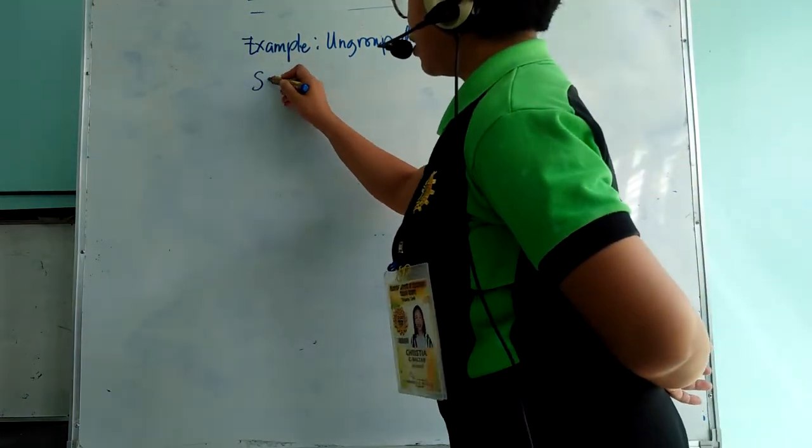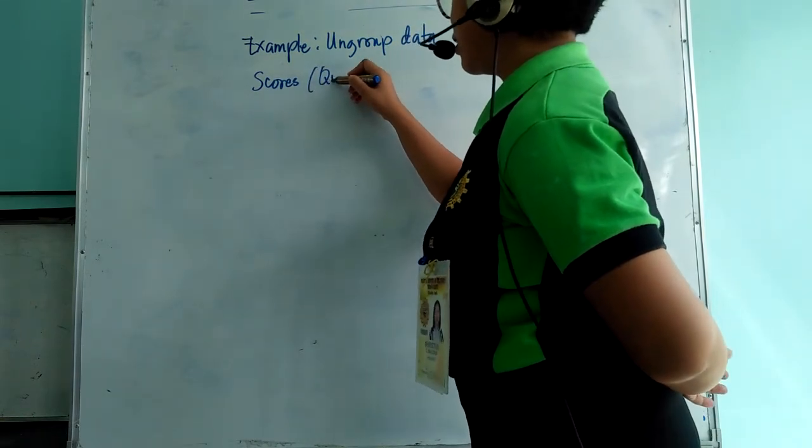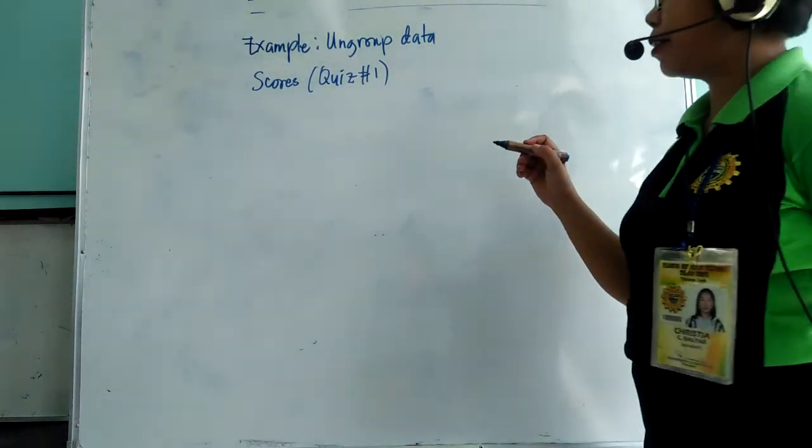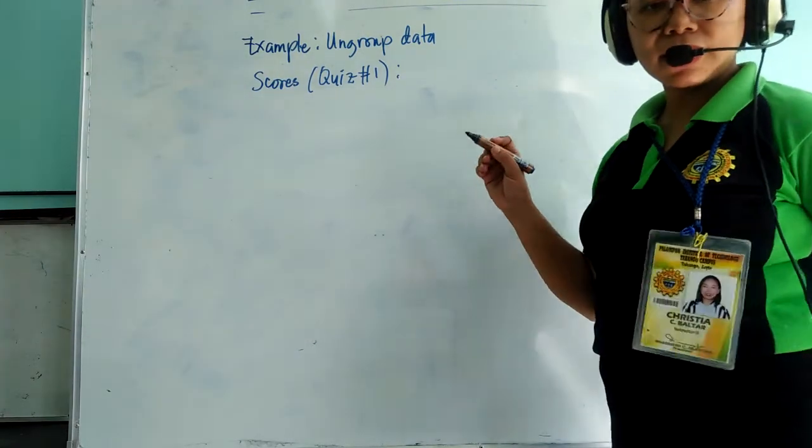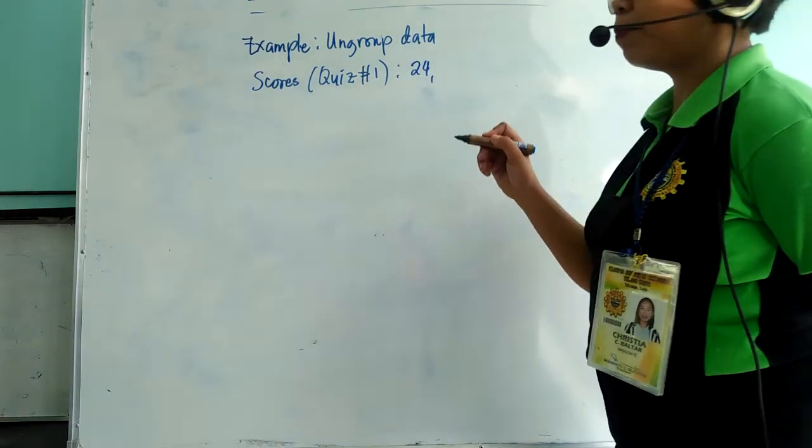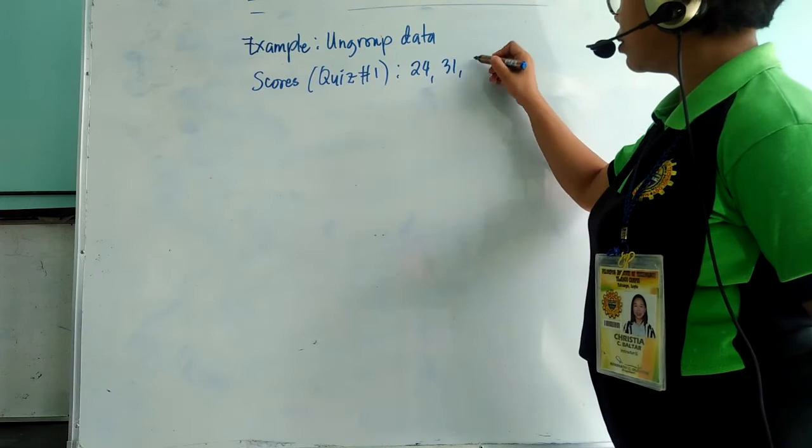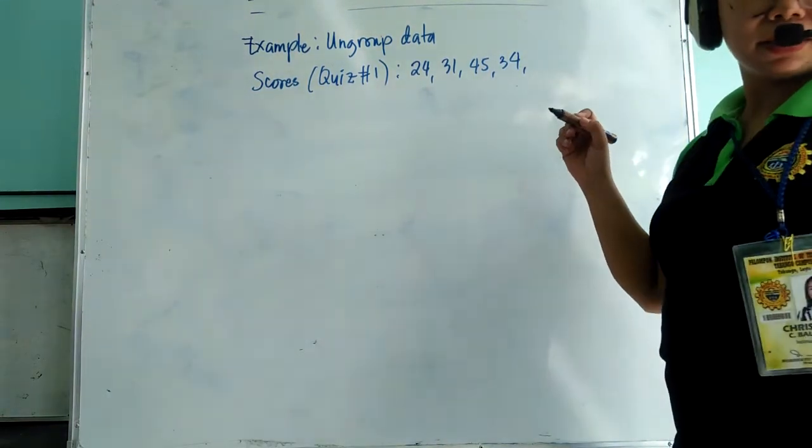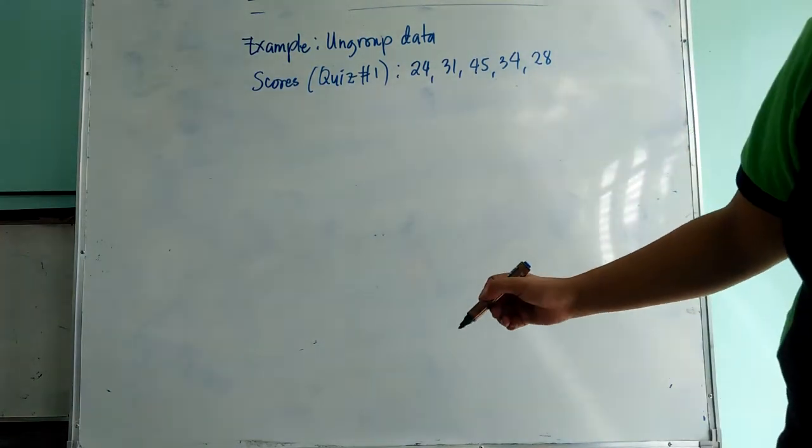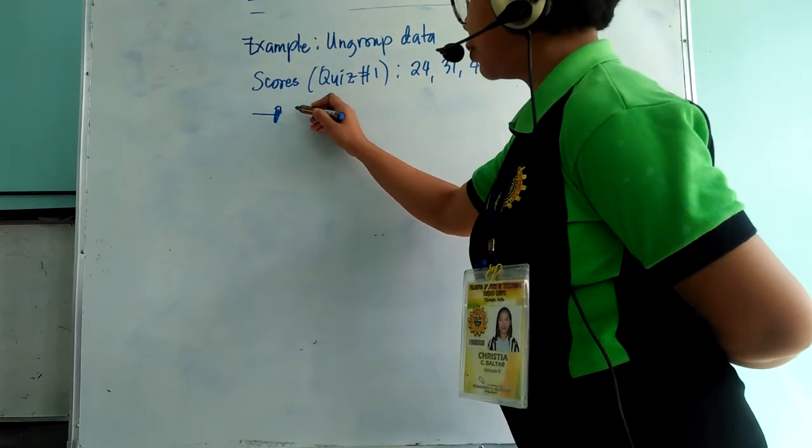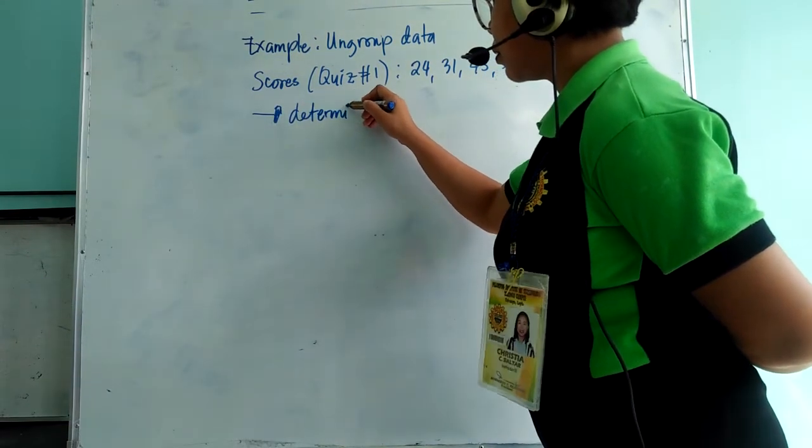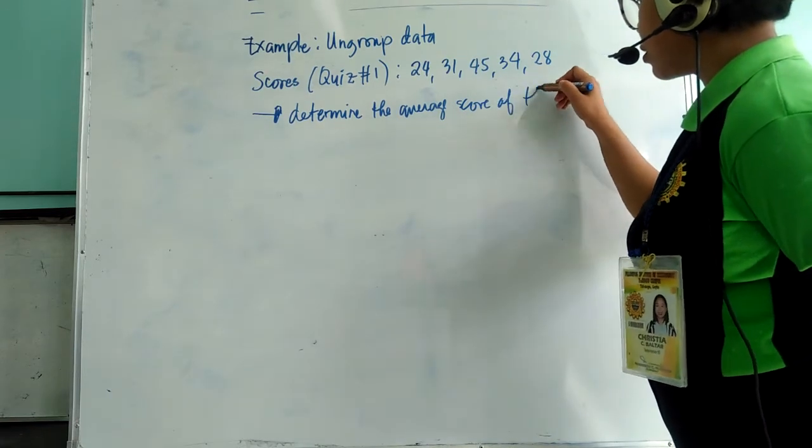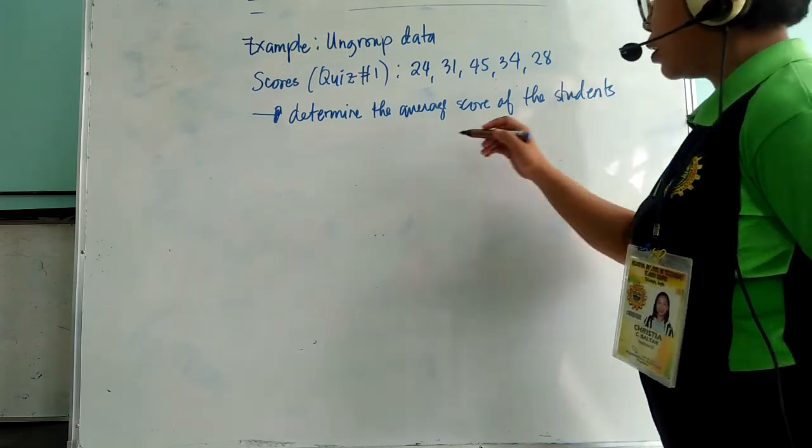Let's say we have here the scores of the students in quiz number 1. Let's say the scores of 5 students are 24, 31, 45, 34, and 28. So we wanted to determine the average score of the students using the mean.